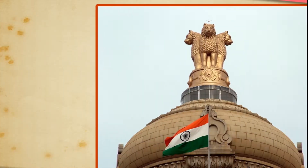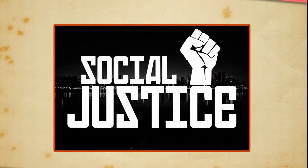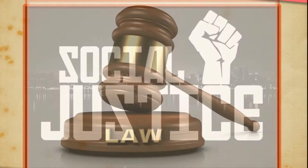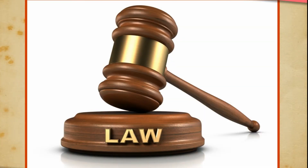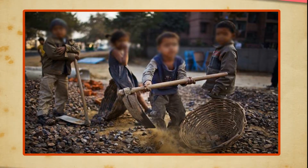Through making, enforcing and upholding these laws, the government can control the activities of individuals or private companies so as to ensure social justice. Many of these laws have their basis in the fundamental rights guaranteed by the Indian Constitution. For instance, the right against exploitation says that no one can be forced to work for low wages or under bondage.